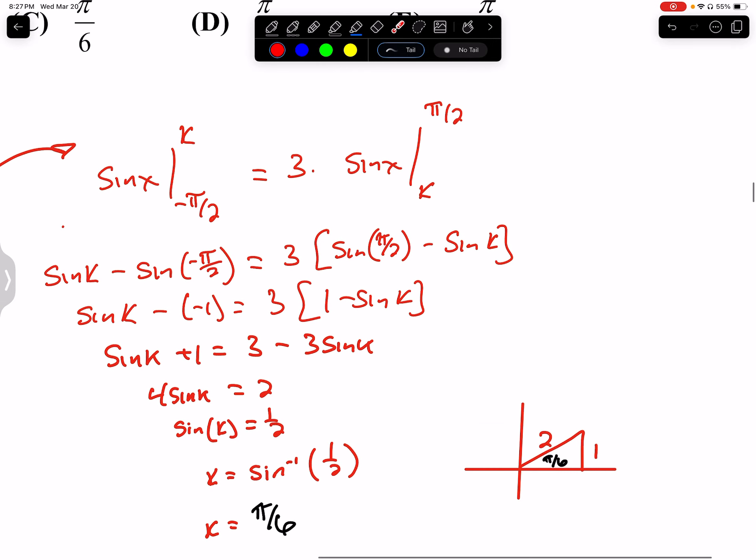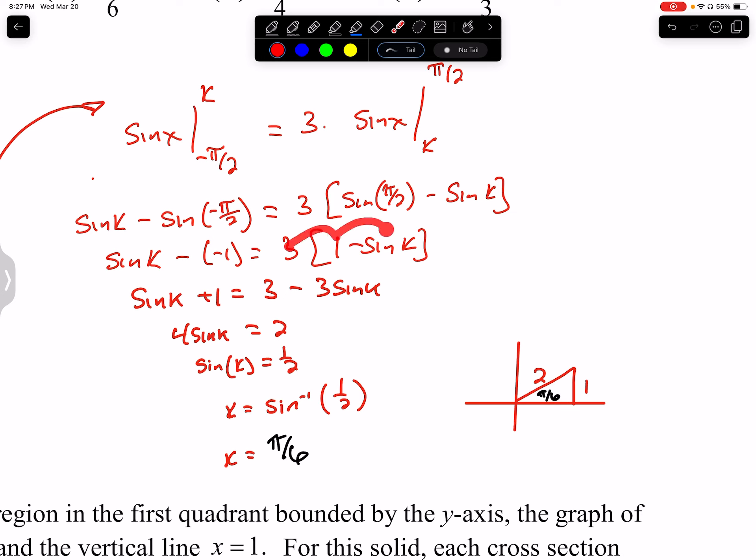Over here, we evaluate sine from k to pi over 2. So you put pi over 2 in and k in. Sine of pi over 2 is 1. Distribute to 3. And we get 3 minus 3 sine of k. So now we've got, this is where we are.